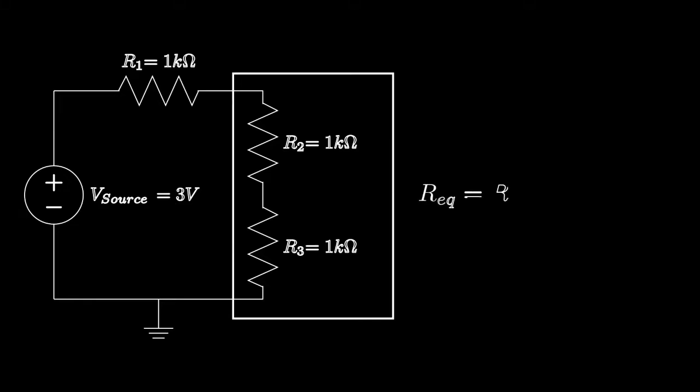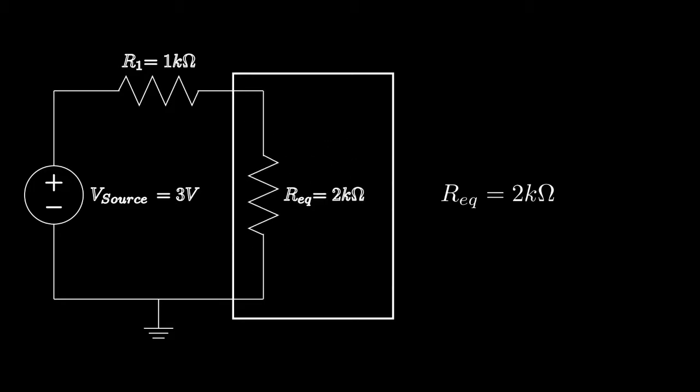To start off, we have these two resistors in series, which we know how to combine using our equivalent resistance for series equation, so we can combine them as shown. Adding their values together, we get a 2kohm resistor. You can see with this, we can create almost any resistor we want by putting two resistors together.